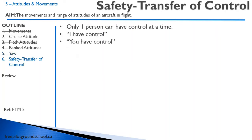Let's talk about a safety item: the transfer of control. This is likely your first lesson and you're going to be going flying very shortly. It's very important that you understand who is flying the aircraft. Even though there are two controls, only one person can be flying the aircraft at a time — you can't be fighting over the controls. So we say 'I have control' and 'you have control.' If your instructor says 'I have control,' you say 'you have control' and let go. What is not acceptable is both people flying the aircraft at the same time. If you're doing something wrong and can't land, the instructor will take control and you just let go.